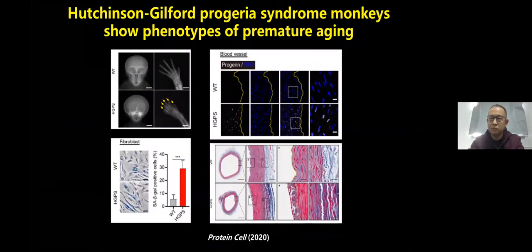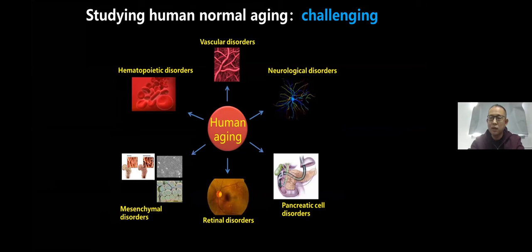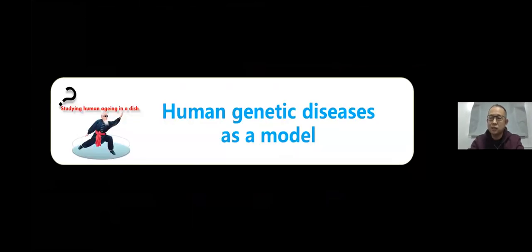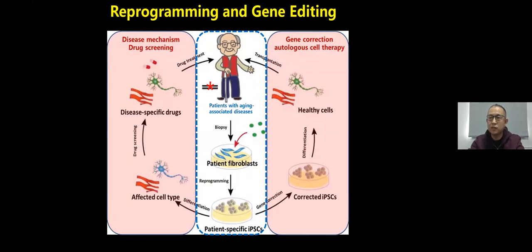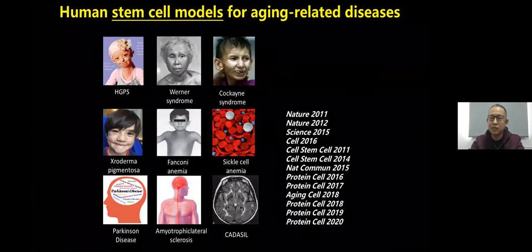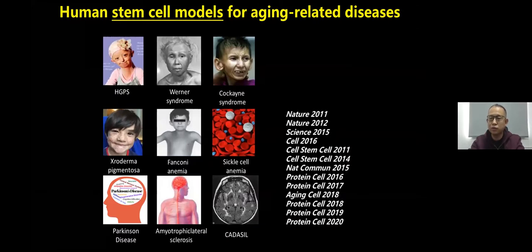Studying human aging is important but also challenging, because aging of different organs can cause various human diseases. We use various genetic disease models to study human aging. The research method we use is a combination of somatic cell reprogramming and gene editing. In the past 10 years, we have generated a series of stem cell models of human aging-related diseases, including HGPS, Werner syndrome, and others. Using these models, we study the pathogenesis of these diseases and possible intervention targets.